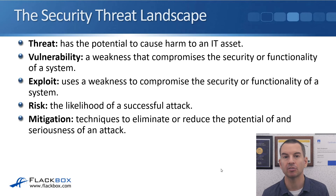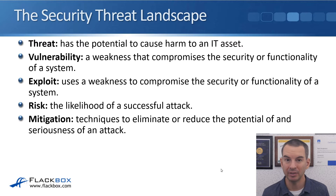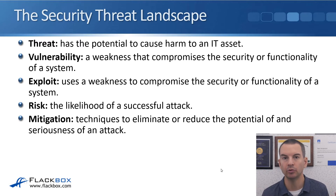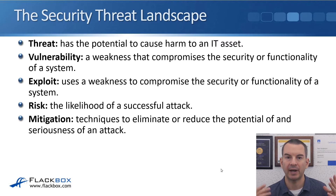An exploit uses a weakness to compromise the security or functionality of a system. So using that old version of Windows again as the example, it's got a vulnerability because the software is out of date. It's the exploit which the attacker can use which exploits that particular vulnerability. A risk is the likelihood of a successful attack — how likely is it that an attack is going to happen? You also want to factor in what would be the impact if you became a victim of that attack as well.